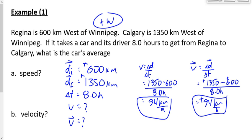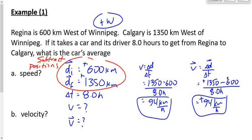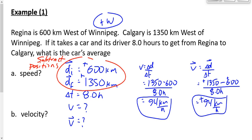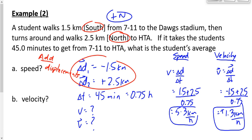In the last question we were given positions, so we subtracted positions to get displacement. In this question we were given displacements, so we added displacements to get the total displacement. Then we simply divide that displacement by time. The rule is: subtract positions or add displacements to get displacement or distance, then divide by time.